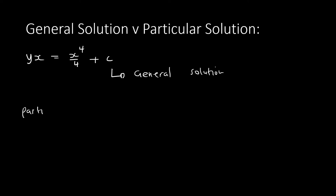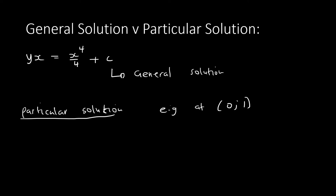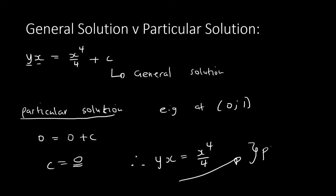For a particular solution, they will give you a coordinate to substitute and get c. For example, if they say at (0, 1), then y is 1 and x is 0. Substituting: 1 = 0⁴/4 + c gives c = 1. So y·x = x⁴/4 + 1 is the particular solution. If there is c it's the general solution; if you've solved for c it's the particular solution. The questions will be clear — they'll say 'determine general solution' or give you a coordinate for the particular solution.